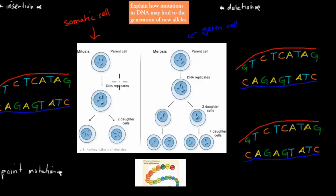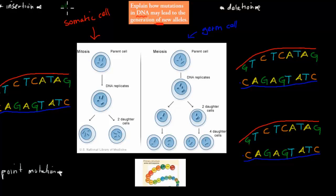Now I'm going to quickly go over the actual topic, because the question says: explain how mutations in DNA may lead to the generation of new alleles. So how can we have new alleles from mutations? First of all, what is an allele? An allele is a version of a gene.